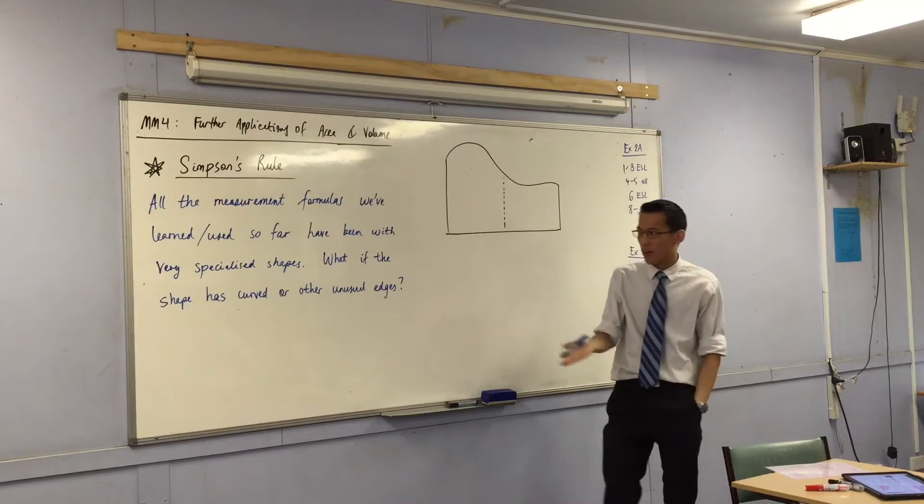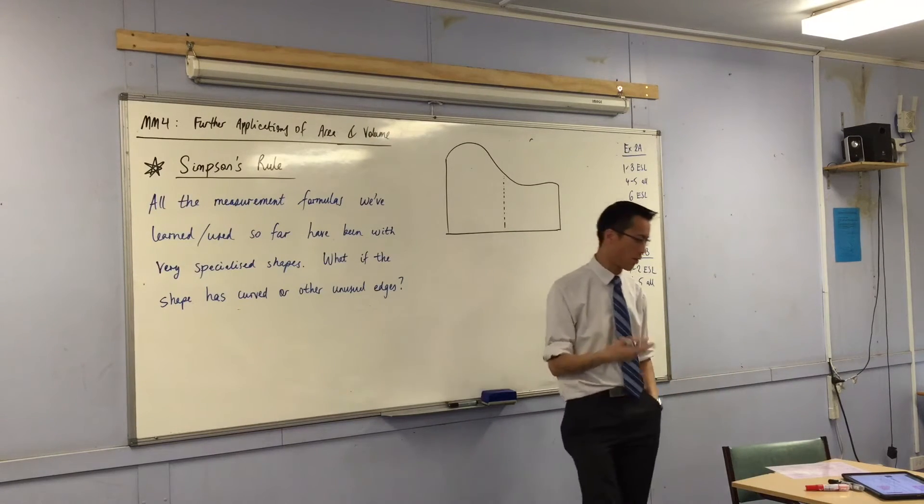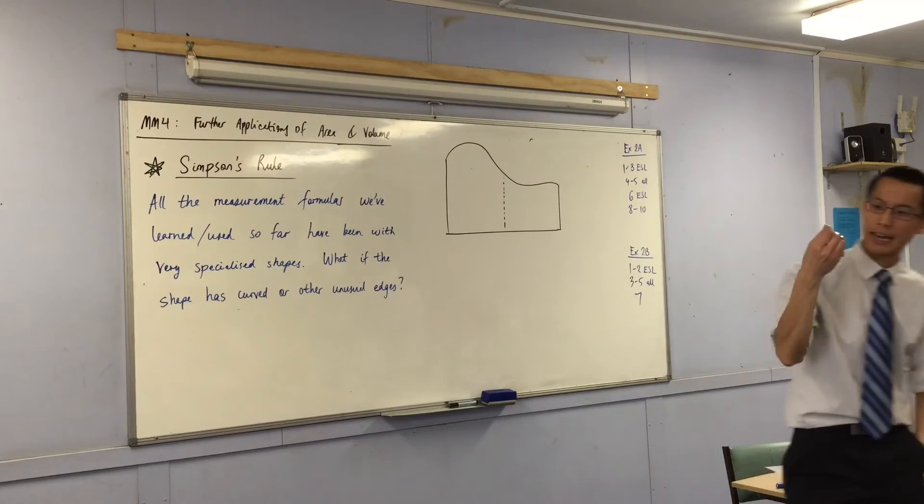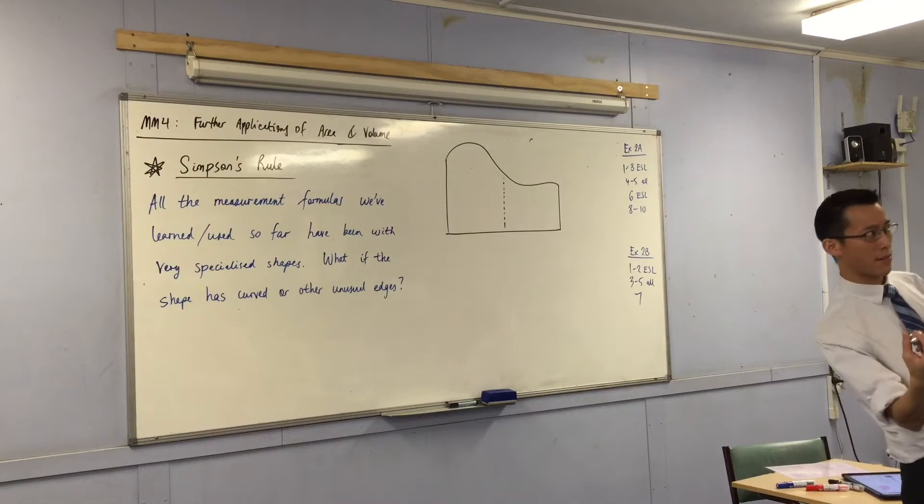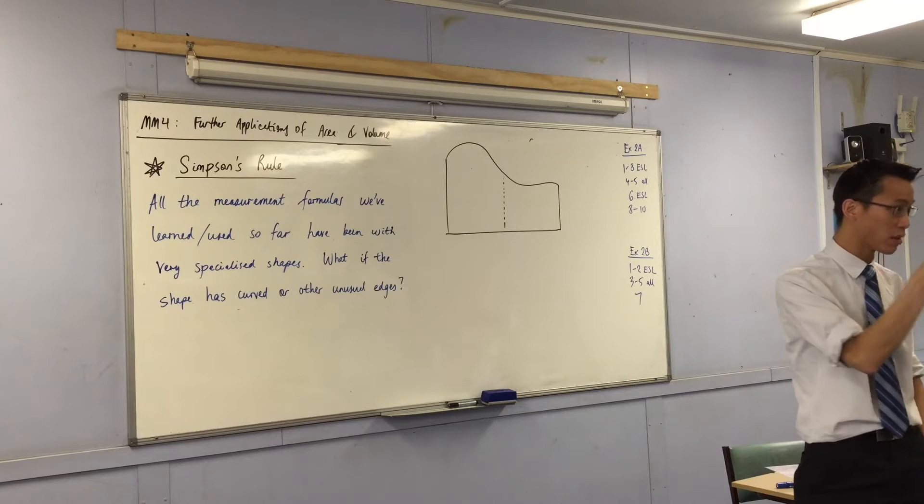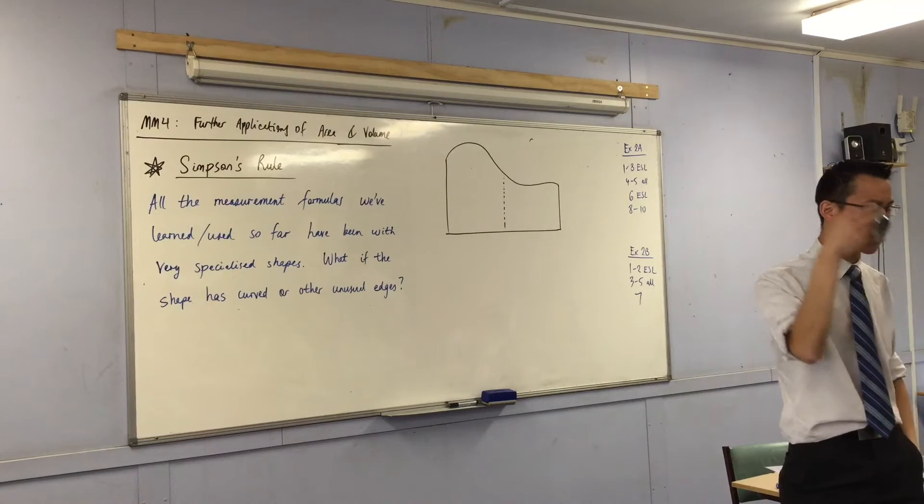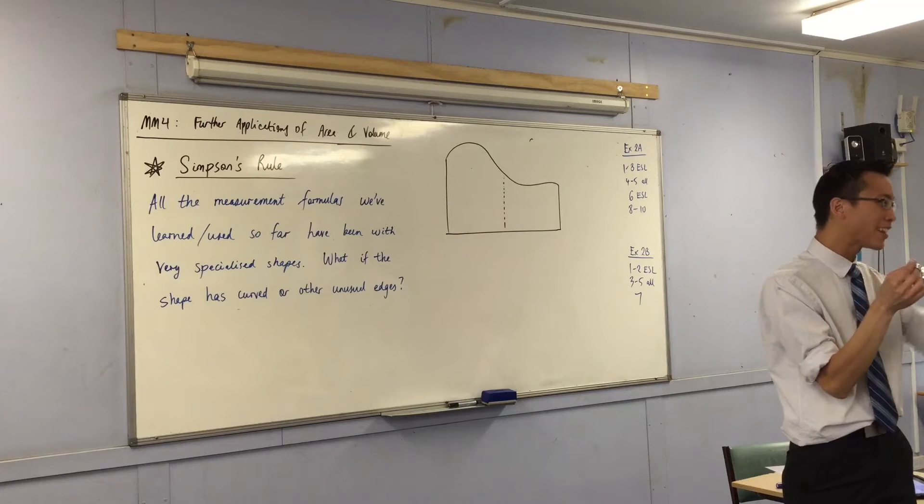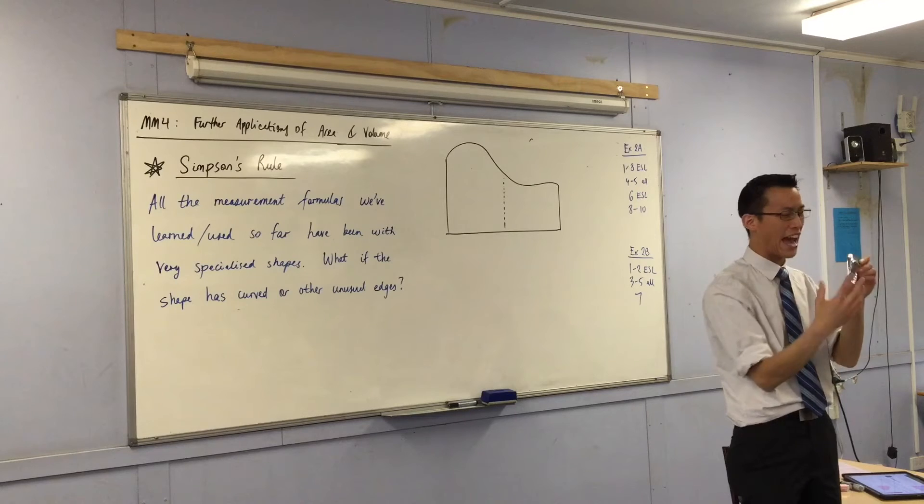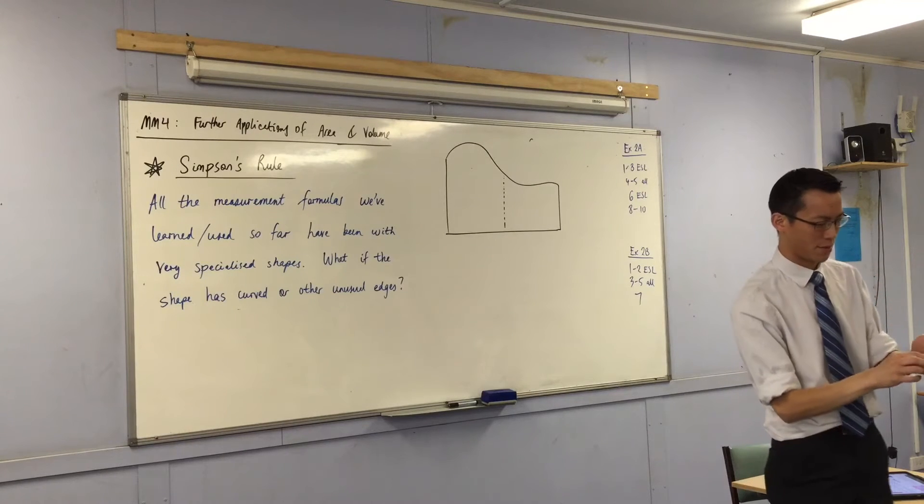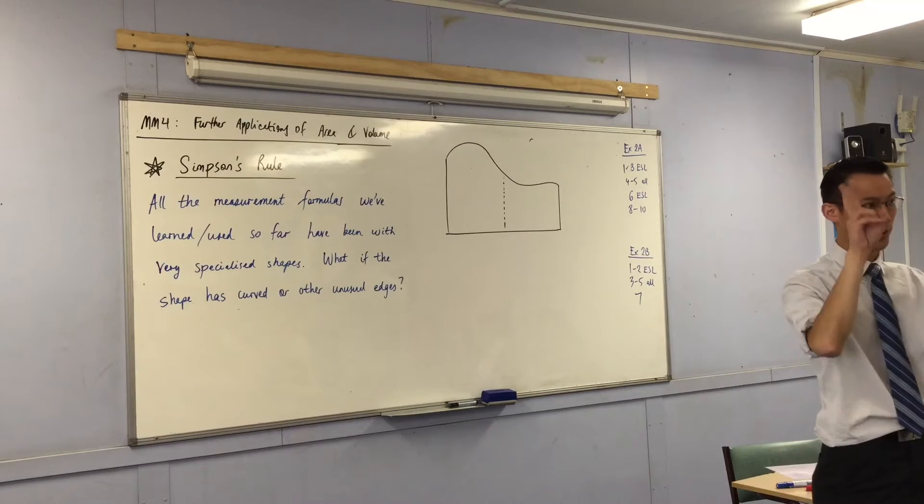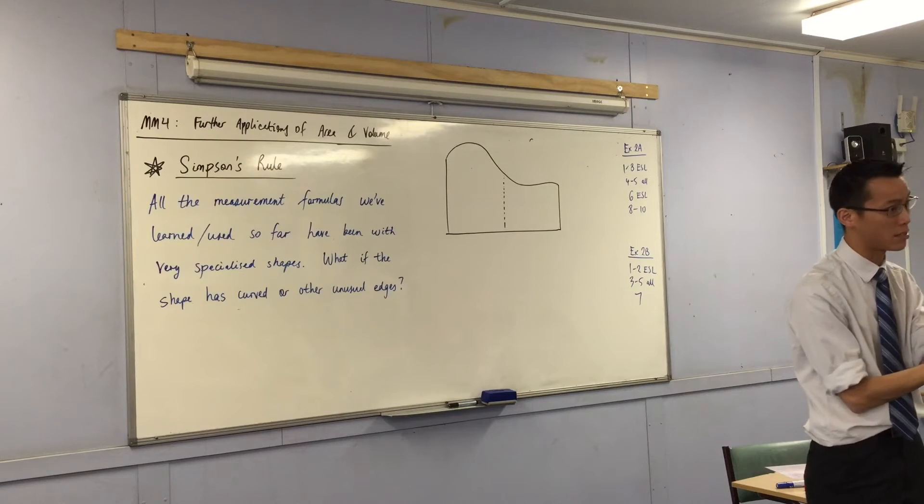But the thing is, the real world is full of these shapes. In fact, in a real way, this is the example I always use. My watch, right? This is the watch I wear every day. I've worn it for about five years. Now, it looks like the face of the watch is circular. But if you got a microscope out and you zoomed in on the edge, you'd find it's super bumpy and jagged, and it's got heaps of dents in it, because I'm not very careful with it. Now, for that reason, you can't really use the area of a circular formula on this, because it's not really a circular one.